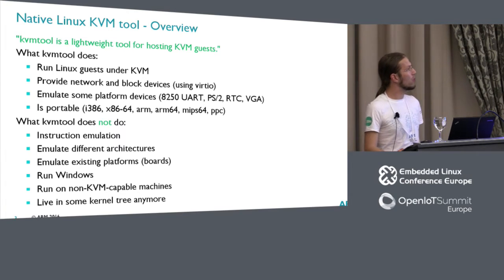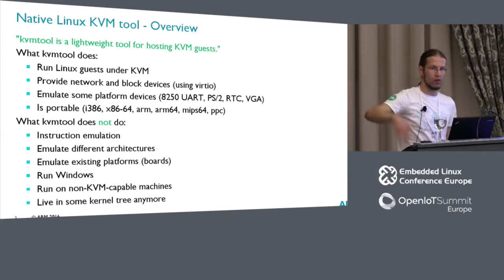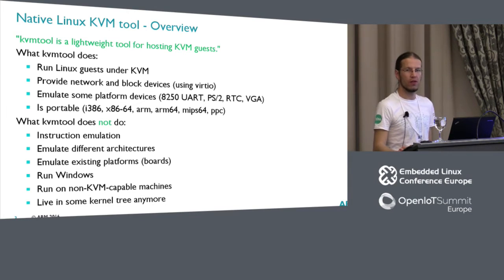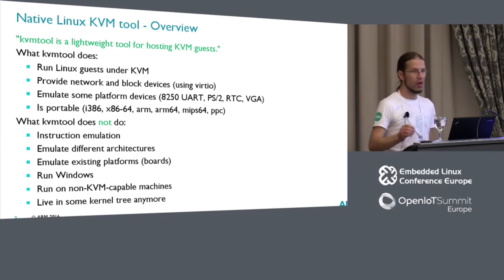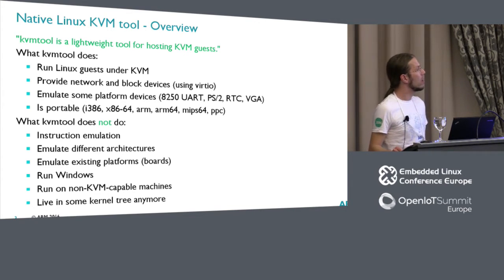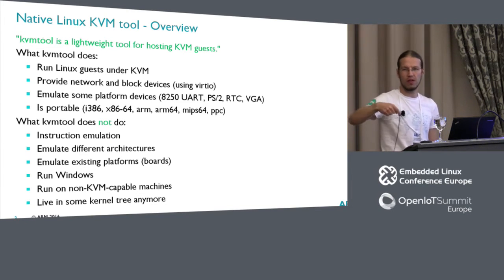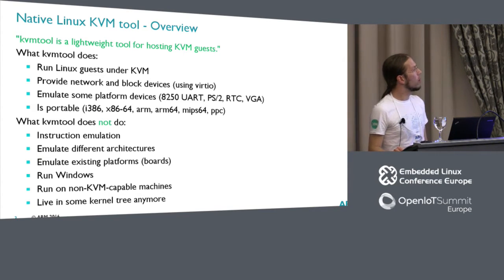What KVM tool does not do explicitly is instruction emulation — there's not a single line about it in the code. In contrast to QEMU, which goes a really long way to efficiently emulate different instruction sets, KVM tool does not. So it runs only the same instruction on the same architecture it runs on, because it uses KVM, which has this limitation. Without instruction emulation, you cannot run ARM on x86 or x86 on ARM — it's only about virtualization, not emulation. It also doesn't emulate existing platforms.